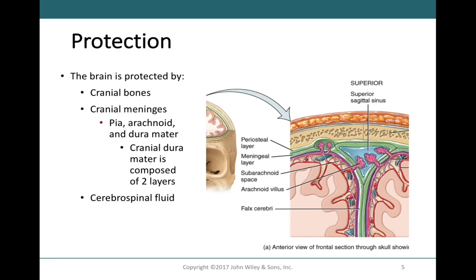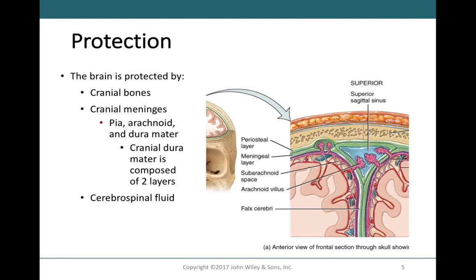The brain is part of the central nervous system and shares the same three protective layers as the spinal cord: bone, meninges, and cerebrospinal fluid. From chapter 13, we had the same layers wrapping around the spinal cord. The brain has an outer layer of cranial bones forming a vault, and we also find the cranial meninges — dura mater, arachnoid mater, and pia mater — in the same arrangement.